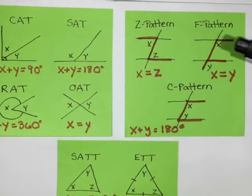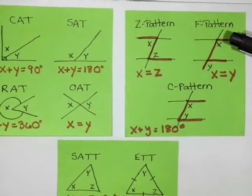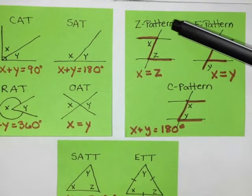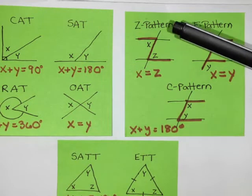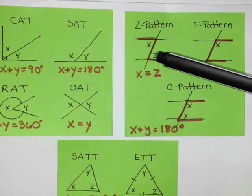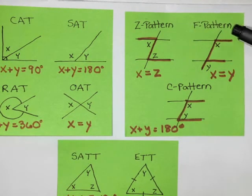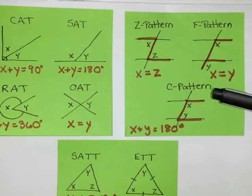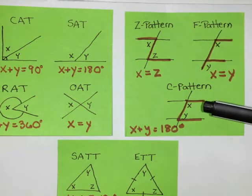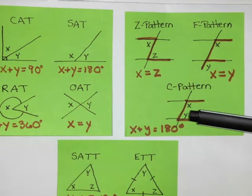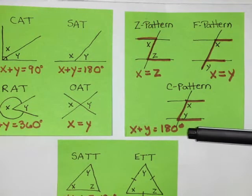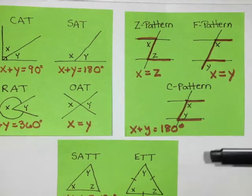We also talked about three parallel line patterns: the Z pattern, where angles in the Z pattern are equal; the F pattern, where angles in the F pattern are equal; and the C pattern, where the angles are not equal — they actually add to 180 degrees.